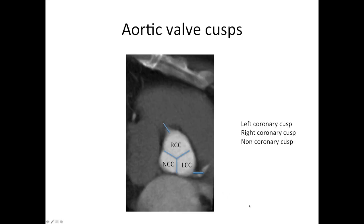A word on the naming of the aortic valve cusps. This is the aortic valve with its Mercedes-Benz sign. Coming off this side, we have the left coronary artery — so this cusp is called the left coronary cusp. Up here we have the right coronary artery, so this one is called the right coronary cusp, even though it's at the front. And this third cusp, which doesn't have any coronary arteries associated with it, is called the non-coronary cusp.